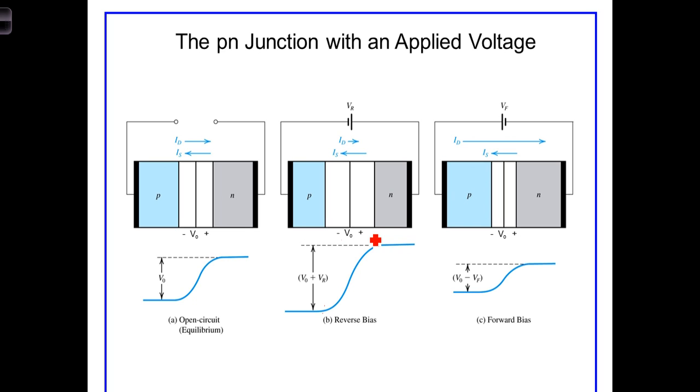The increased or expanded barrier voltage then greatly reduces the diffusion current, so I-sub-D is reduced significantly, yet I-sub-S, the drift current of thermally-generated minority carriers acting under the influence of the junction voltage, remains roughly the same.